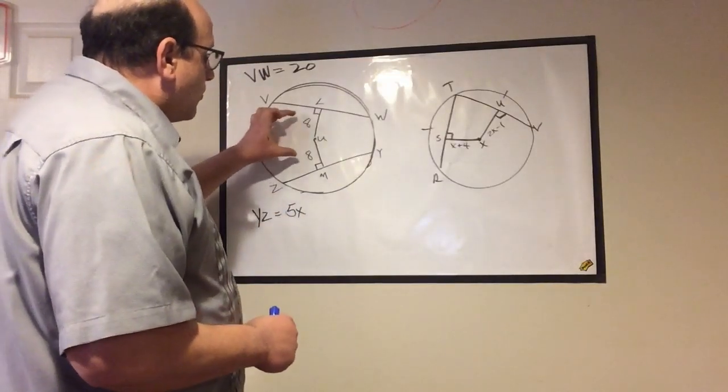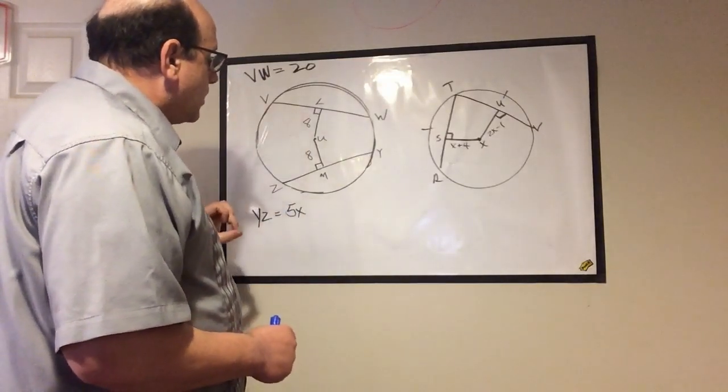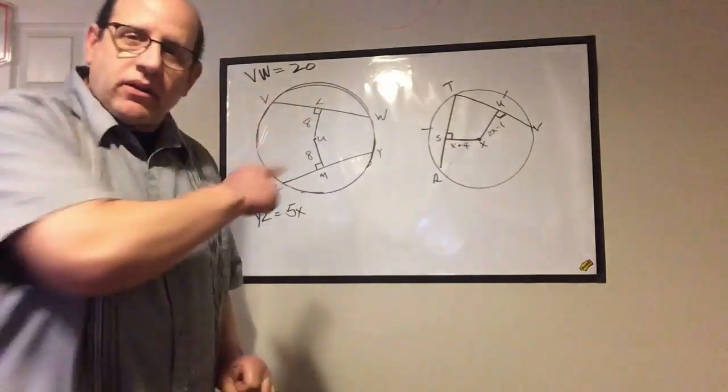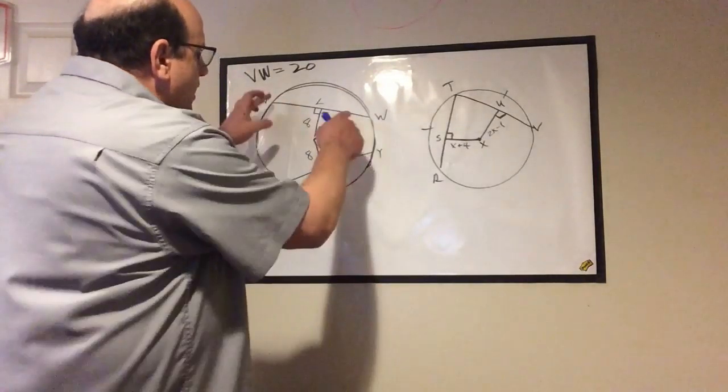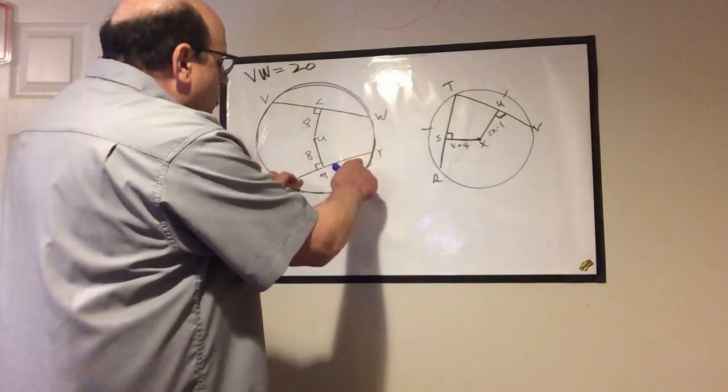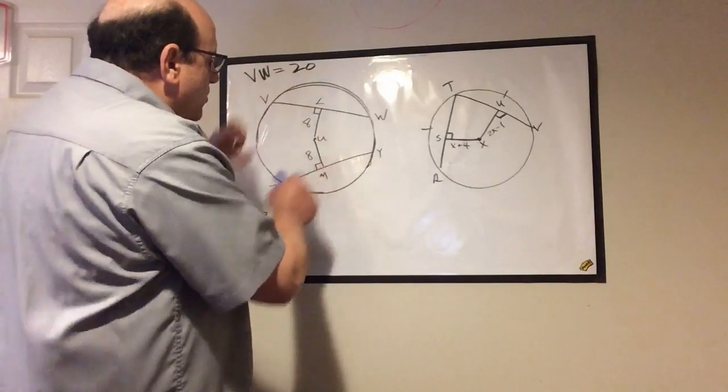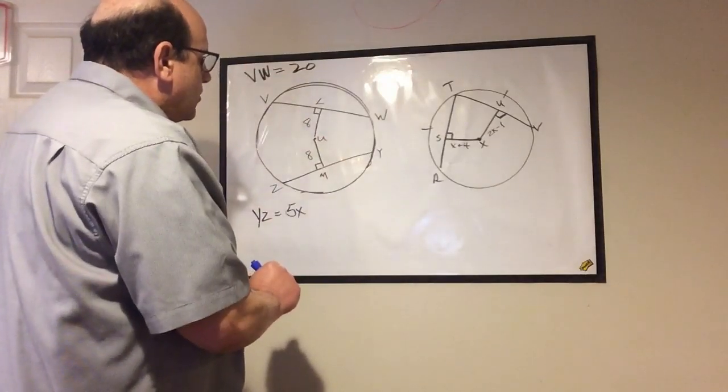For the first one, we have perpendicular bisectors. If those perpendicular bisectors are the same length, then these two chords have to be the same length because it's the same distance from the center of the circle.